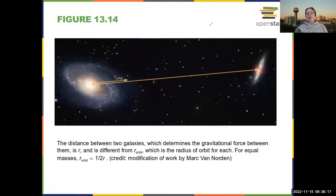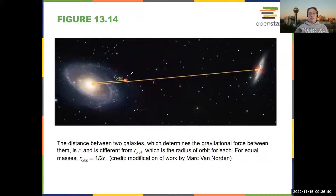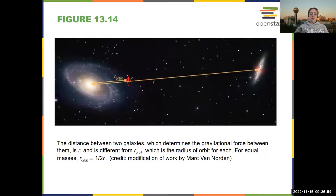When talking about big objects, you consider the center of mass of the system. These two objects are actually orbiting around the center of mass of the system. For example, the galaxy on the left is heavier than the one on the right, so the center of mass is closer to it and they orbit around each other. The radius of the orbit is different from the separation between the two — you're looking at the separation from the center of mass.